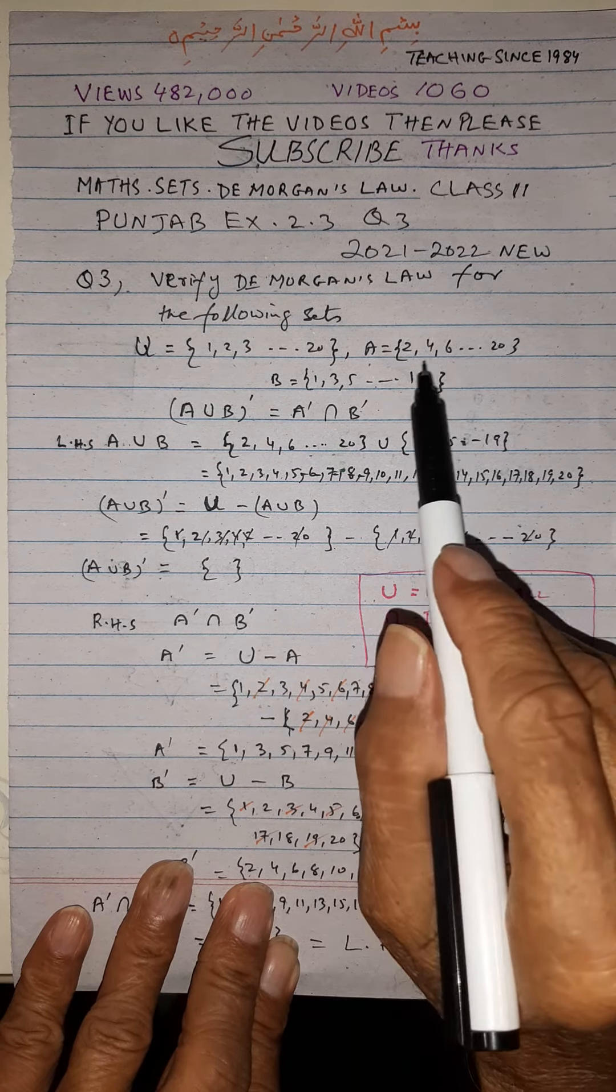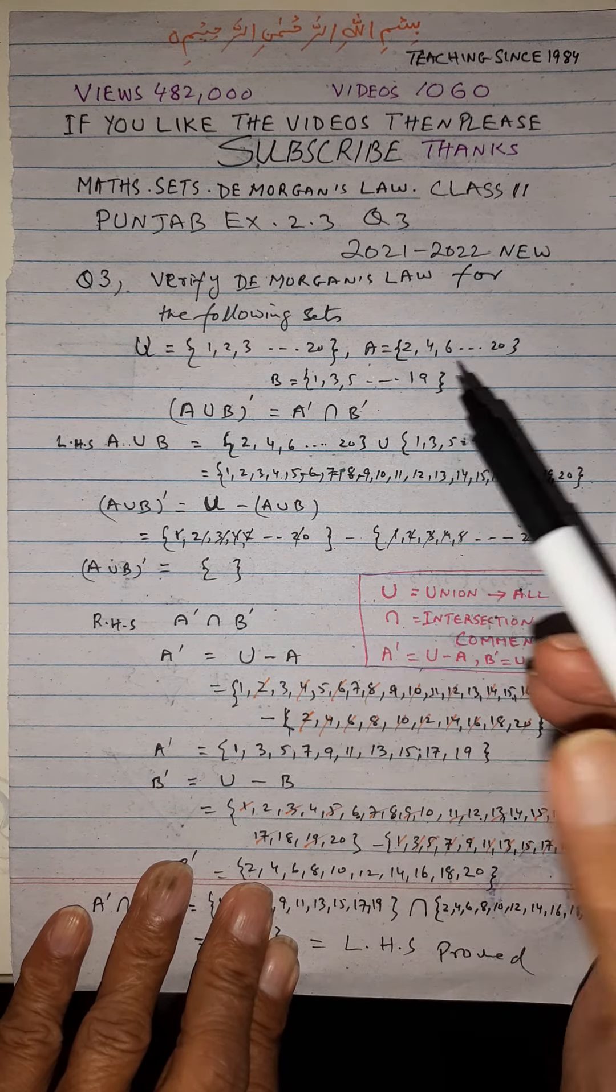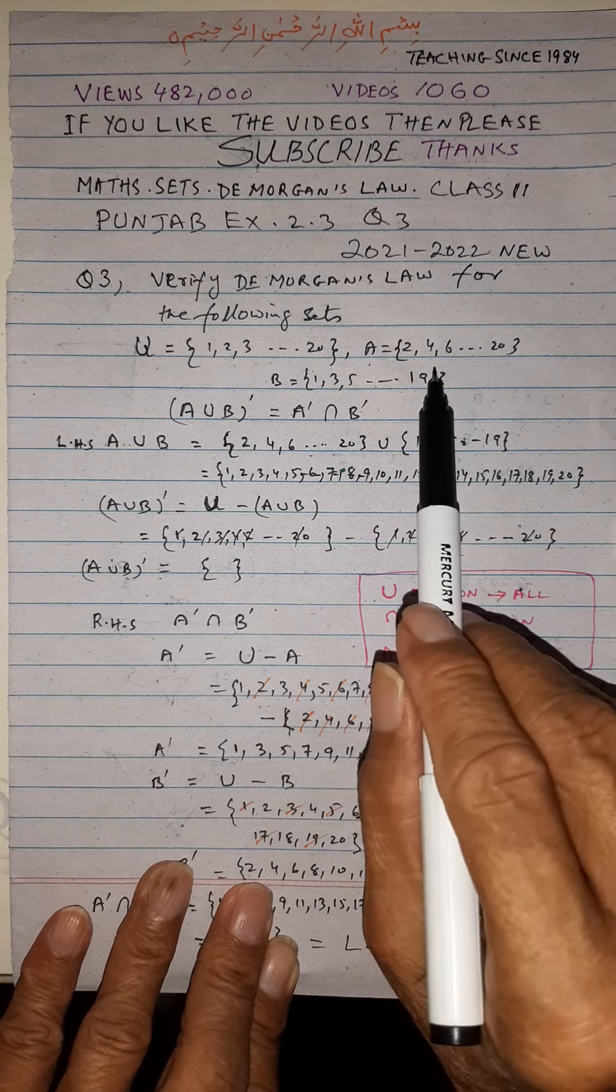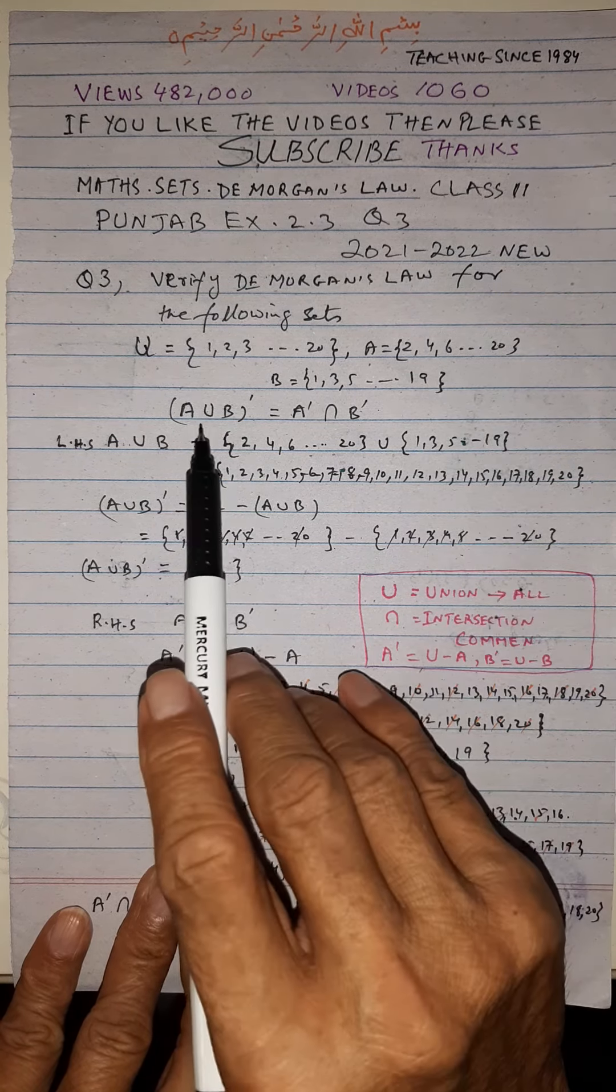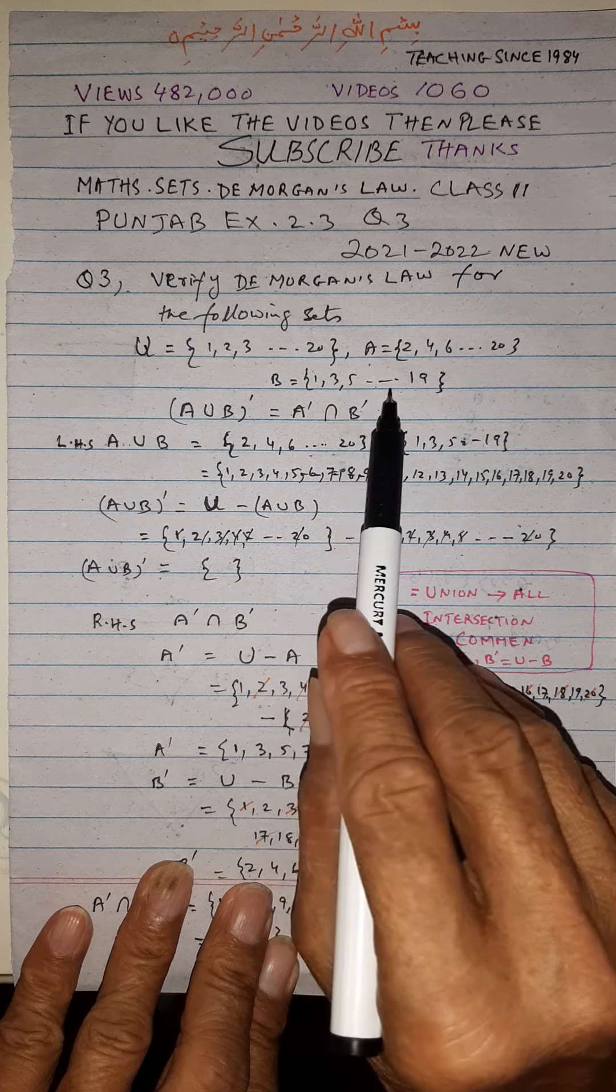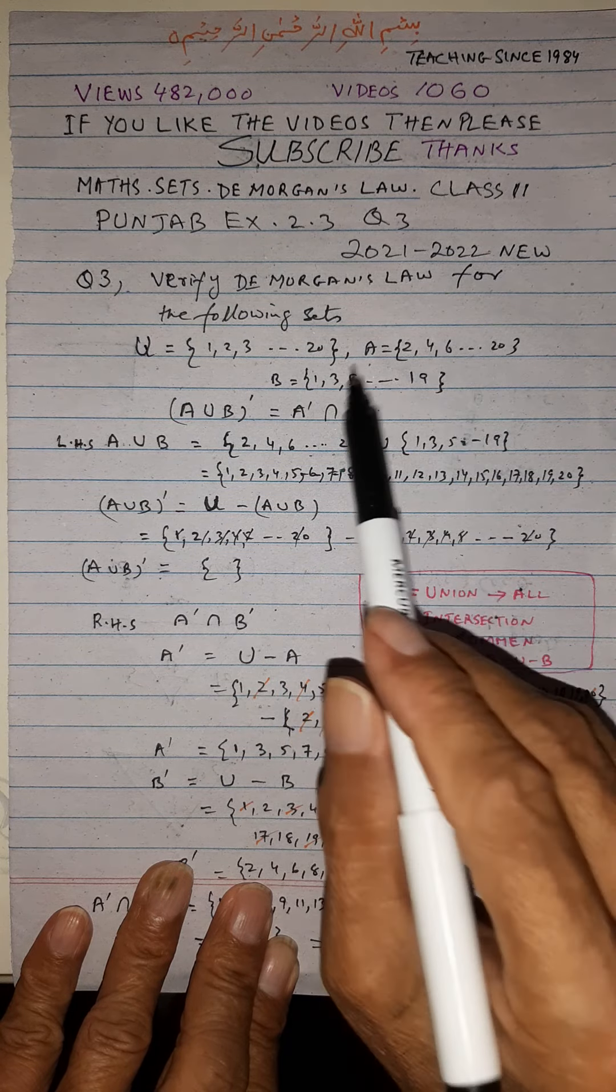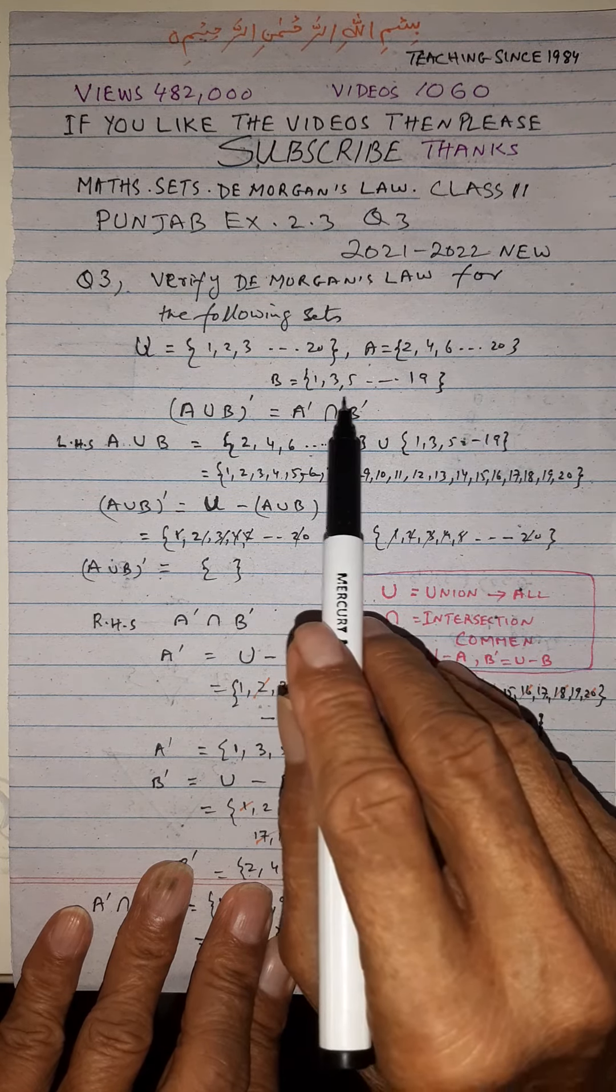A is 2, 4, 6, 8, 20. This is the set of even numbers until 20. And B is equal to 1, 3, 5, till 19. That means this is the set of odd numbers till 19.